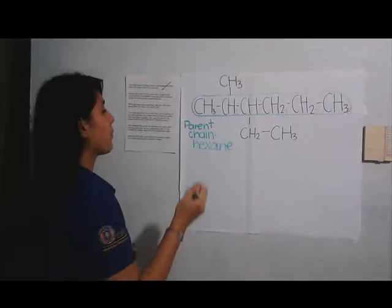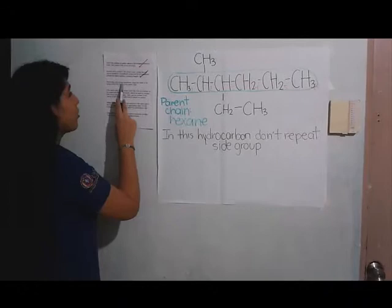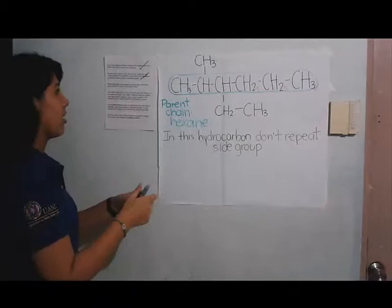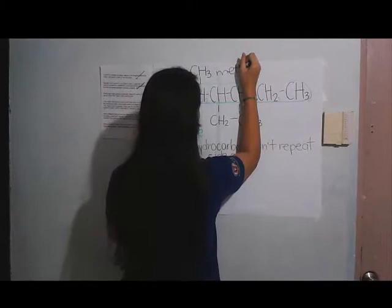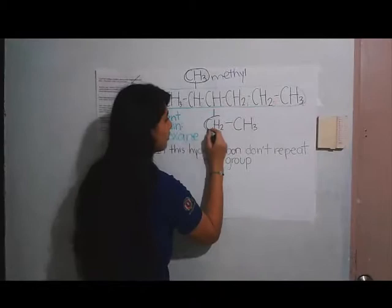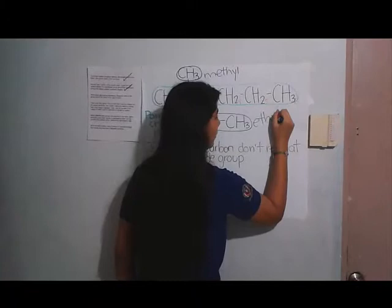The third step says: name each alkyl substituent group and place its name before the name of the parent chain. In this example, there is an ethyl group and a methyl group identified at their respective positions.